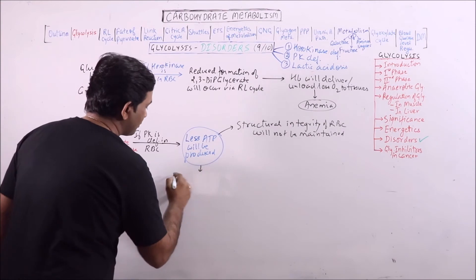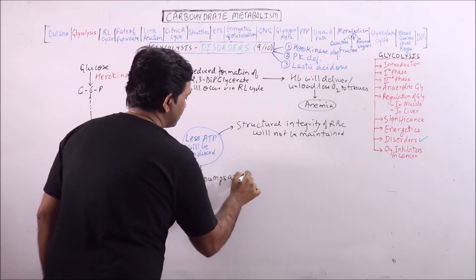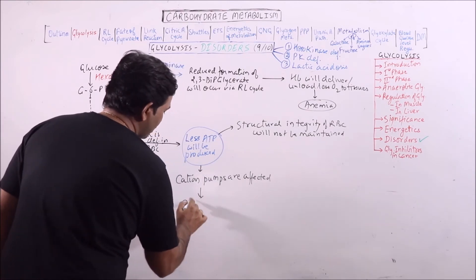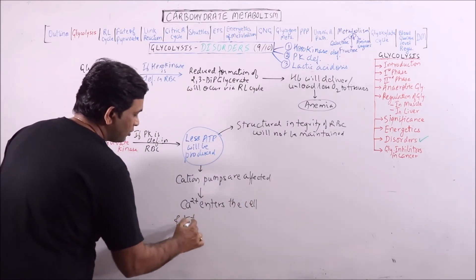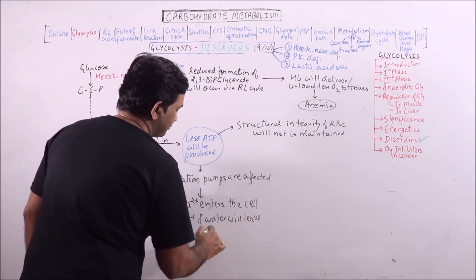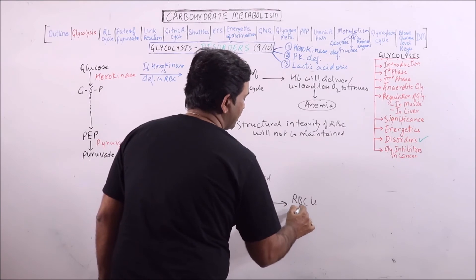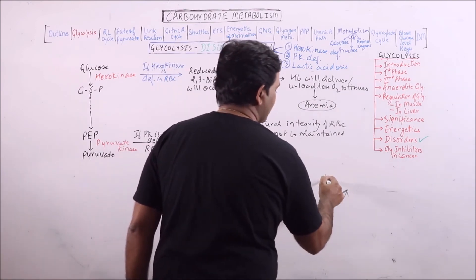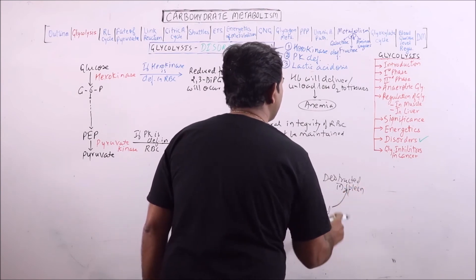Another effect is that cation pumps are affected, because of which calcium enters the cell and potassium and water leave the cell. This will make the RBC dehydrated, and this dehydrated RBC will be destructed in spleen by phagocytosis.